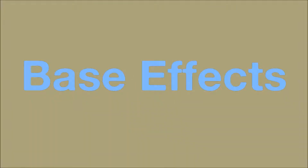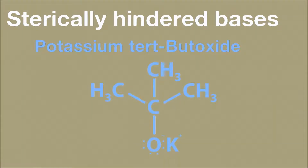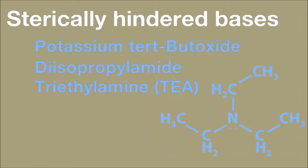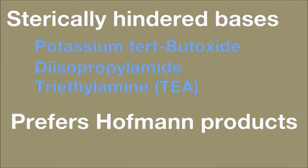Another way to force non-Zaitsev products would be to physically disallow the base from reaching more favorable beta positions. Sterically hindered bases such as potassium tert-butoxide, diisopropylamide, and triethylamine will tend to give Hoffman products because they are too encumbered to reach anything but exterior positions.